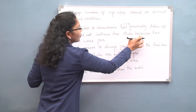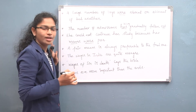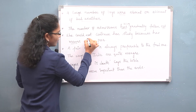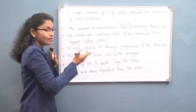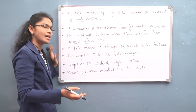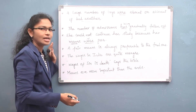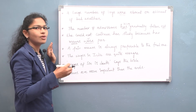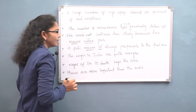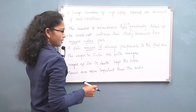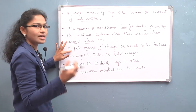'She could not continue her study because her means were poor.' Here 'means' uses 'were' (plural). But in another sentence: 'A fair means is always preferable to the foul one.' Here 'means' uses 'is' (singular). The verb changes because these sentences are conveying different meanings — the word 'means' can be used in different senses.